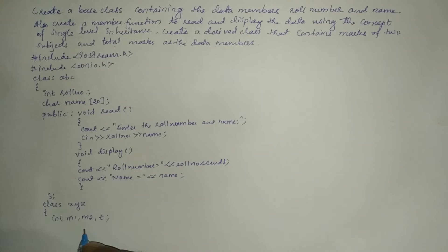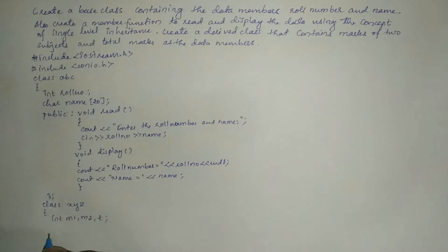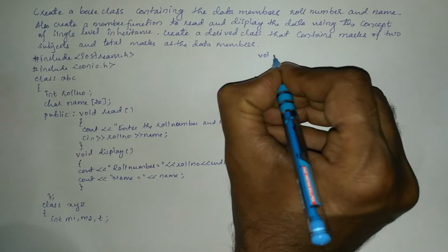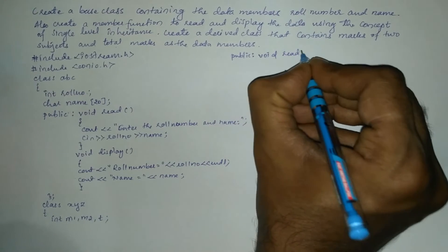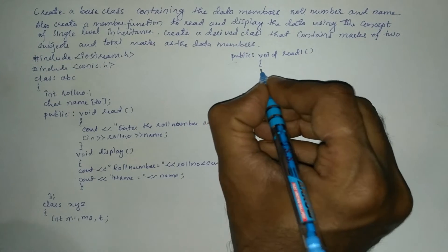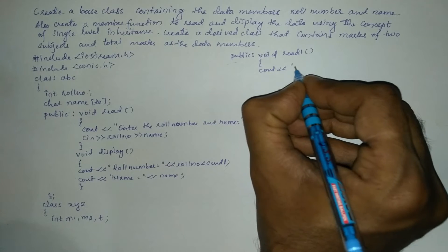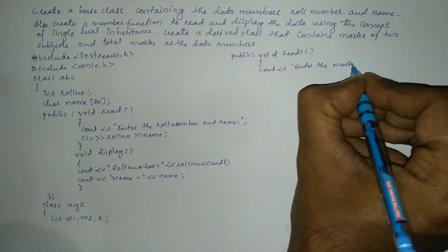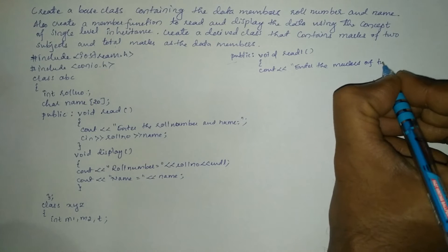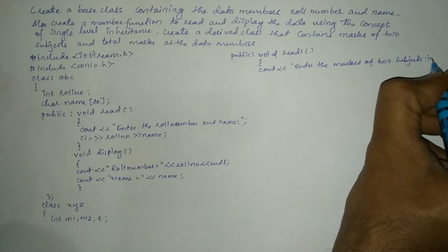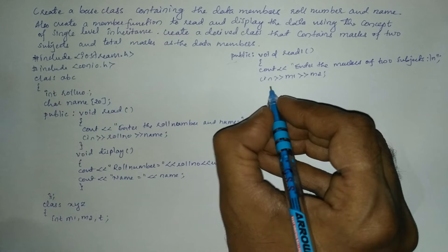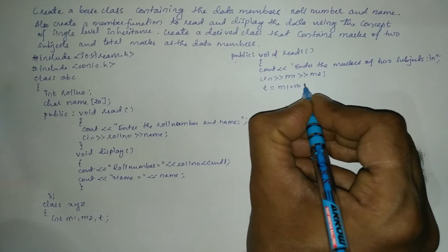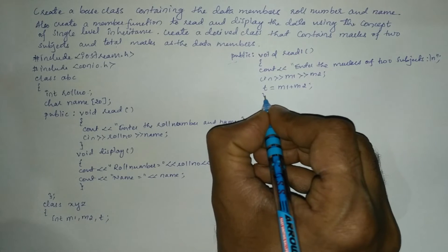Now let us define two more user defined functions which are used for reading the marks, calculating the total, and displaying the same. In the public section we write void read1 with a curly open brace, where we ask the user to enter the marks of two subjects, then cin m1 and m2. Next we calculate total: t is equal to m1 plus m2, which will be stored in the variable t.